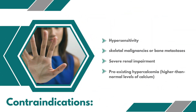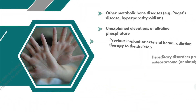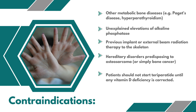Contraindications: Hypersensitivity. Skeletal malignancies or bone metastases. Severe renal impairment. Pre-existing hypercalcemia — higher than normal levels of calcium. Other metabolic bone diseases, for example Paget's disease and hyperparathyroidism. Unexplained elevations of alkaline phosphatase. Previous implant or external beam radiation therapy to the skeleton. Hereditary disorders predisposing to osteosarcoma, or simply bone cancer. Patients should not start teriparatide until any vitamin D deficiency is corrected.